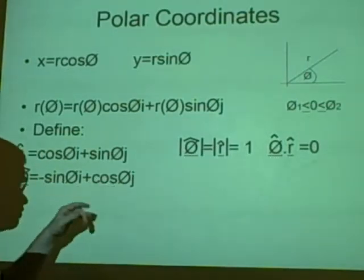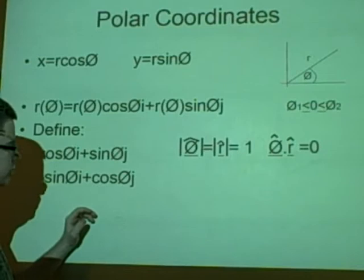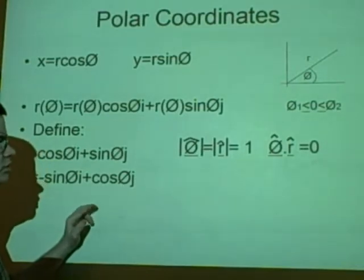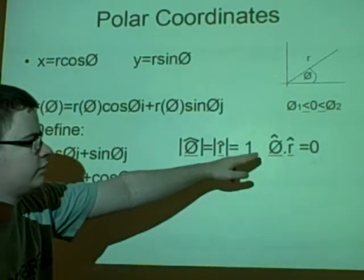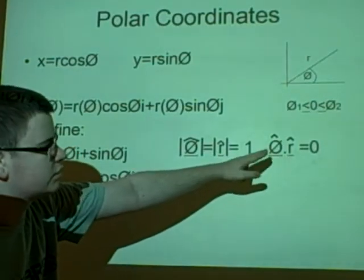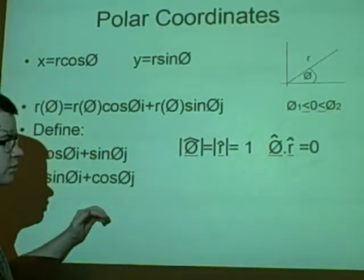There is sine squared and cosine squared because they are adding, they will become 1, they will just disappear. And here, theta hat times r hat is 0 because they are perpendicular. Because this is parallel to this and this is perpendicular to this, they are obviously crossing at perpendicular.